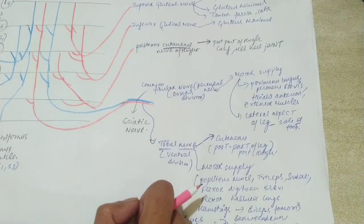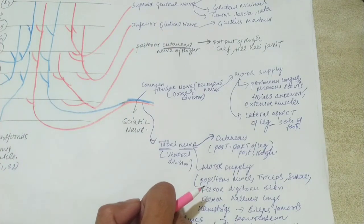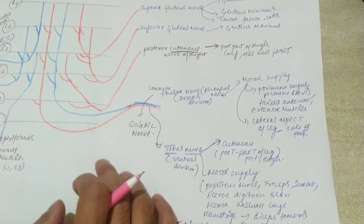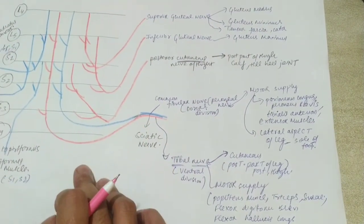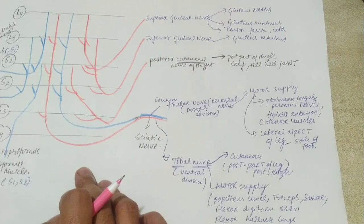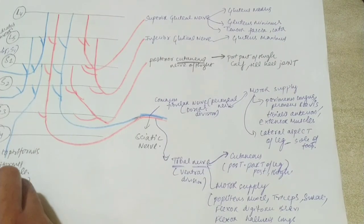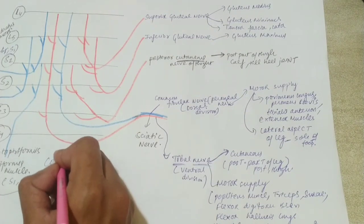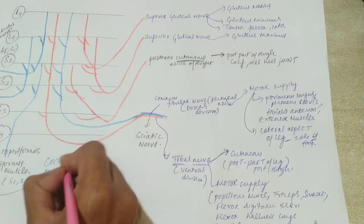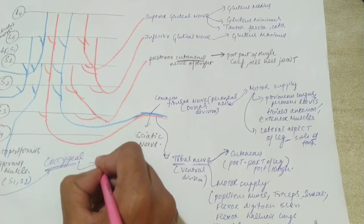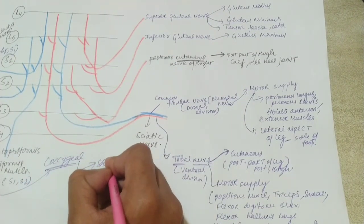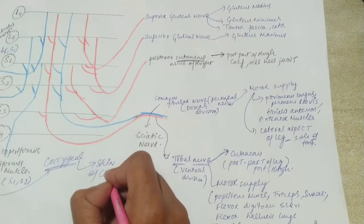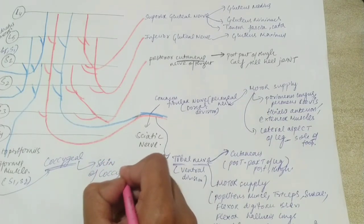Those short nerves — inferior gluteal and superior gluteal — complete the sacral plexus overview. Additionally, S4 and coccygeal 1 together can form a coccygeal plexus, which supplies the skin of the coccygeal region.